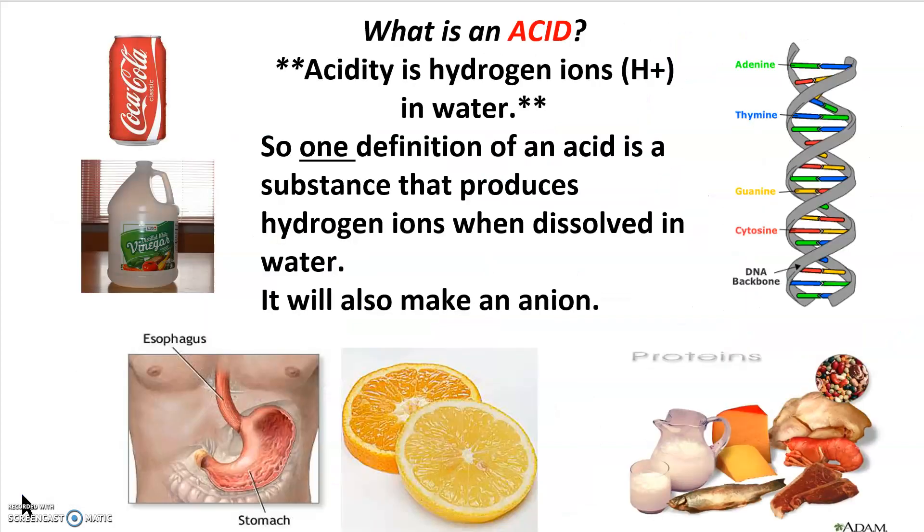Let's actually define an acid. Before we define an acid let's talk about acidity. Acidity is hydrogen ions in water. Repeat this to yourself five times, write it in big fancy letters in your notes. This is one of those crucial concepts you need to know now and for the rest of your science career in school. So if hydrogen ions in water is acidity, an acid is something that creates acidity. In other words it's something that creates hydrogen ions when dissolved in water and an acid will also make an anion when dissolved in water.